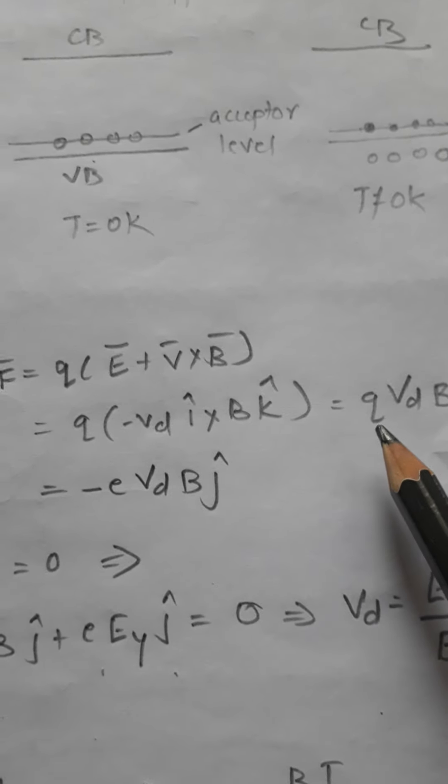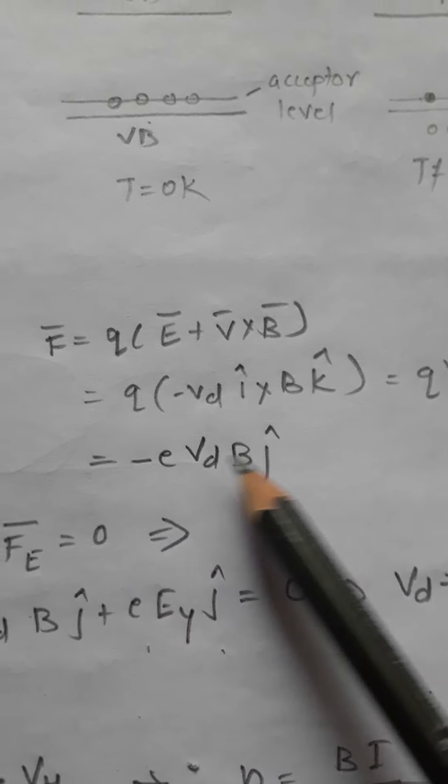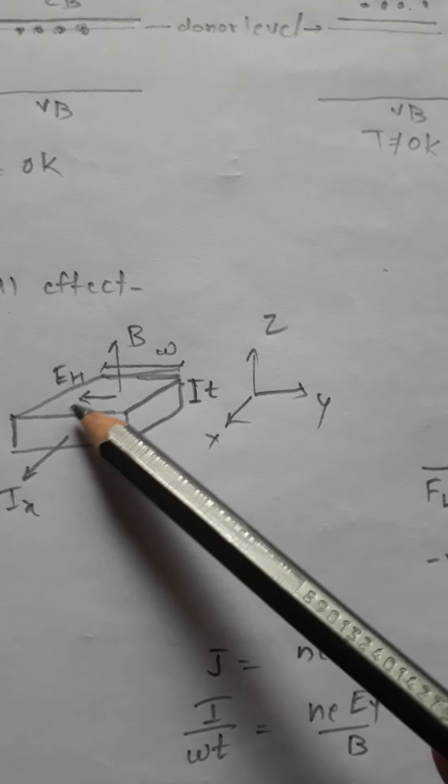This is the force acting on the electrons which is in the negative y direction. Because of this magnetic field, the electrons start moving in this direction and they start accumulating on this surface.